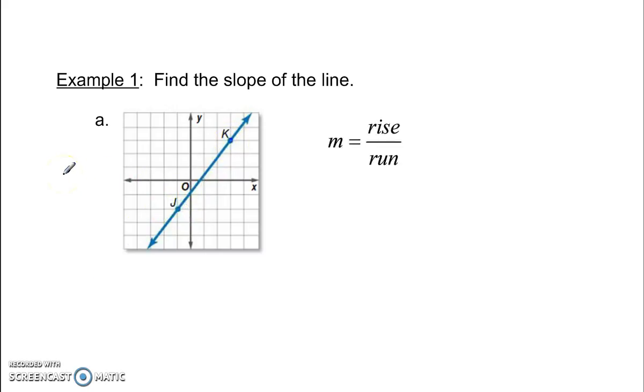Now rise over run. We're going to check what's the rise to get from point j to point k. So the rise, 1, 2, 3, 4, 5, is 5. The run, going this way, over is always to the right, 1, 2, 3, 4. So the slope is 5 over 4, rise over run.